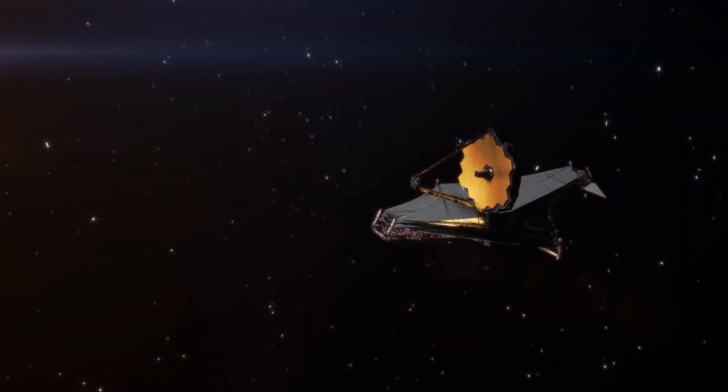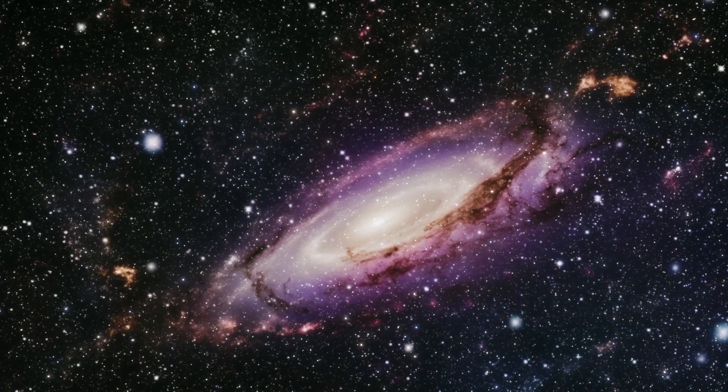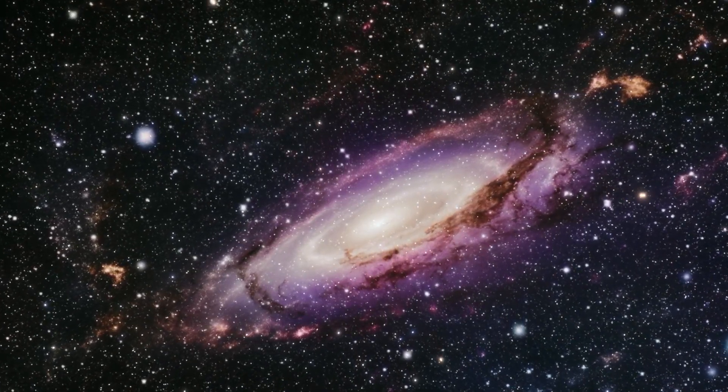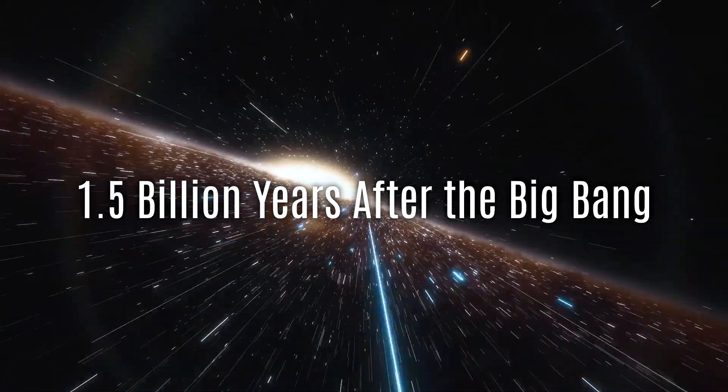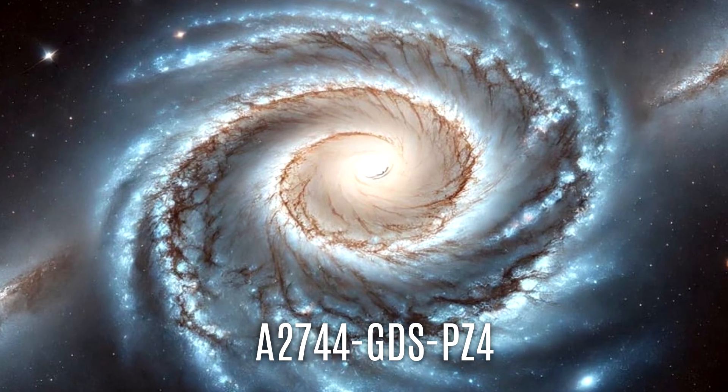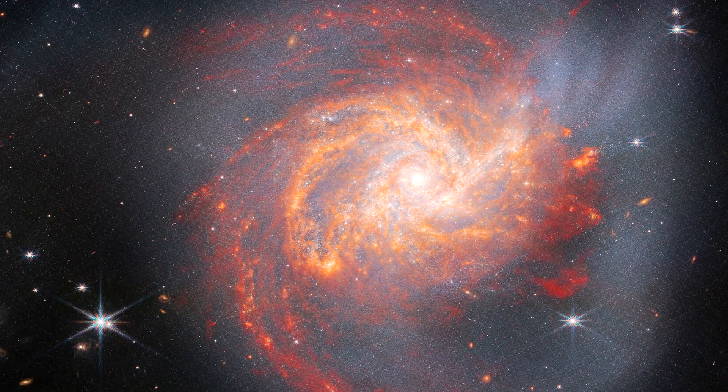But then, James Webb Space Telescope saw something that doesn't fit the script. A stunning discovery. A massive, elegant spiral galaxy, from just 1.5 billion years after the Big Bang. This, my friends, is A2-744-GDSPZ4. And it shouldn't exist. Let's dive in.